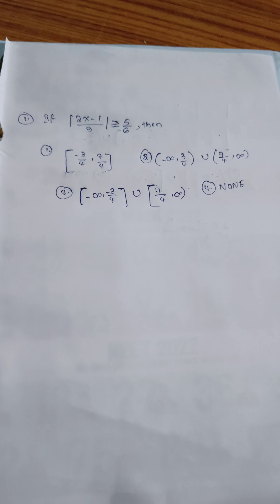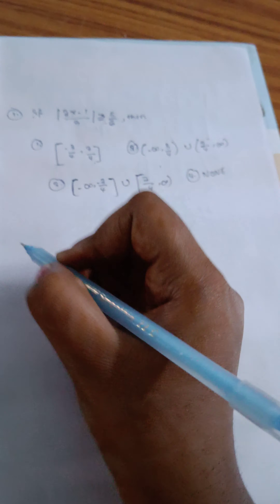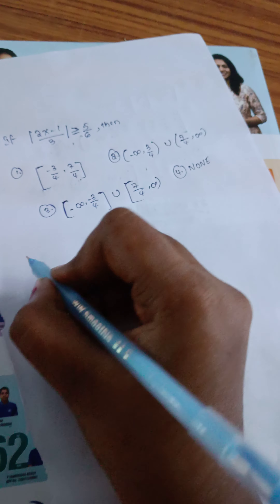Hi guys, welcome back to my channel. I am going to do the absolute value of 2x-1 over 3, which is greater than or equal to 5 over 6. I am going to show you the solution.